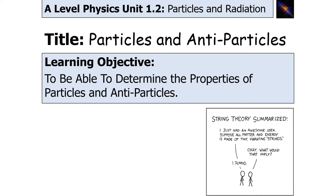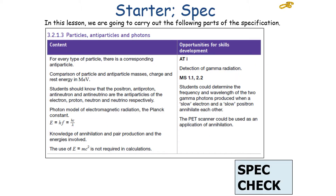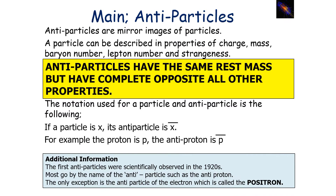In today's lesson, we're going to try to determine the properties of particles and antiparticles. If we've been successful, we can define what antimatter and antiparticles are, recall their properties, and describe what happens when a particle and antiparticle meet — which falls under the AQA A-level physics classification of particles, antiparticles, and photons.